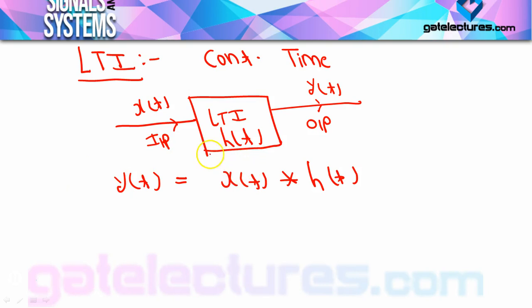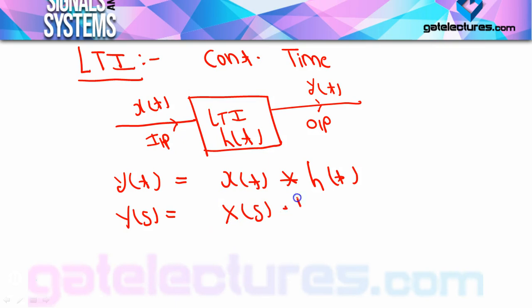If we take the Laplace transform on both sides, you have to remember that whenever there is convolution in the time domain, there will always be multiplication in the Laplace domain. And the opposite is also true — whenever there is convolution in the Laplace domain, there will be multiplication in the time domain. So, one domain's multiplication corresponds to the other domain's convolution, and vice versa.